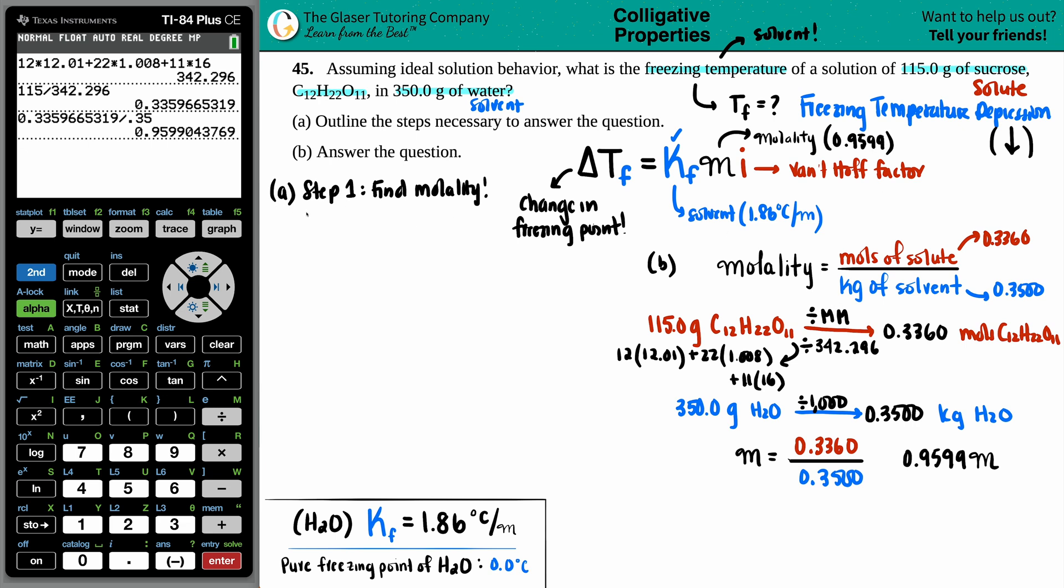Now the second step is to find the I value, the van't Hoff factor. Now the van't Hoff factor is a kind of like a theory number where van't Hoff factor is the number of ions that is being dissolved by the solvent. So it's basically how many ions your solute is breaking up into. Now there's two types of solutes you can have. You can have ionic, metal and nonmetals, or all covalents.